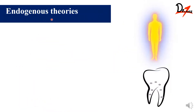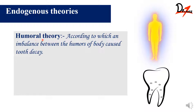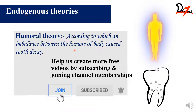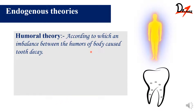We have endogenous theories and exogenous theories. In endogenous theories, we have the humoral theory. According to this, dental decay is basically caused by the imbalance between the different humours of the body — the black bile, blood, phlegm, and mucus. This theory says that when there is an imbalance between these humours, dental caries occurs.